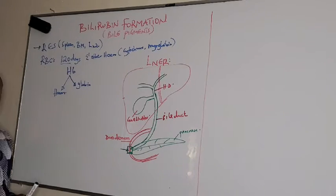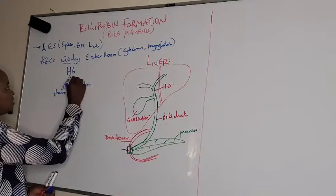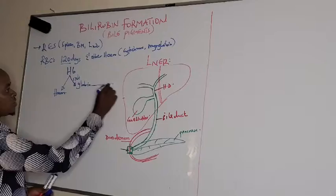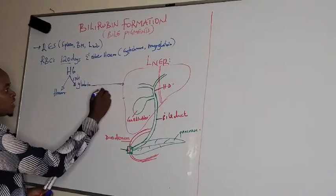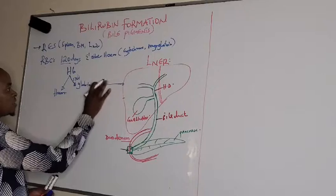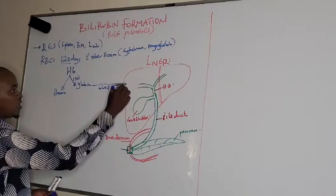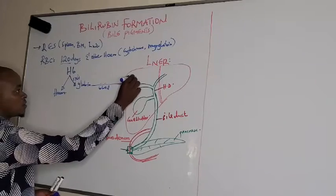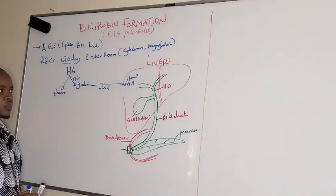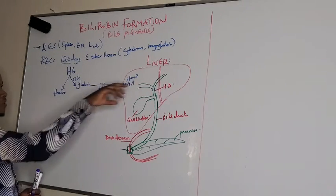The globin which is formed from the splitting of hemoglobin into globin and heme is transported in the blood to the liver, where it is stored as amino acids. So that is the fate of globin.